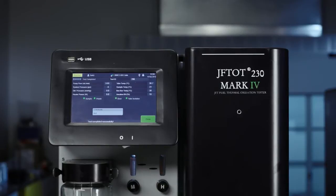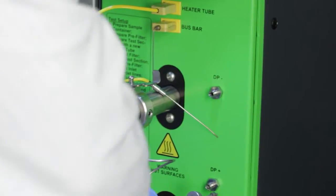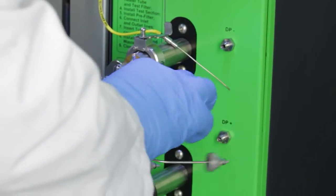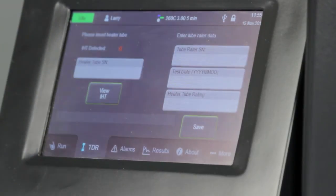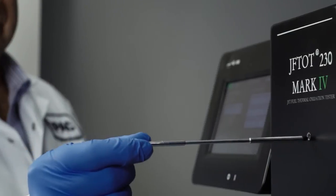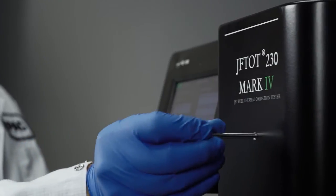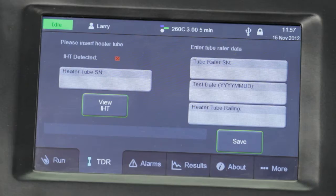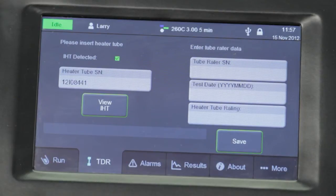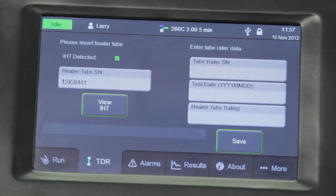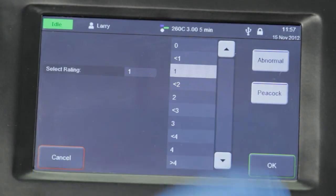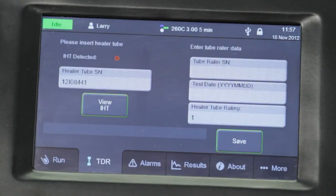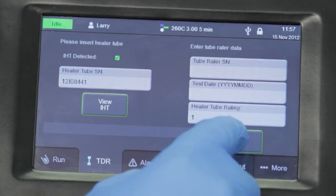When the test is done, you can rate the heater tube. Let the heater tube section cool and then remove the heater tube and rate the deposit as specified by the standard you use. Next, go to the TDR tab. If you used an intelligent heater tube like this one, insert the IHT into the reader slot located at the top of the instrument. The IHT serial number will automatically populate in the serial number field. Select the tube rating from the drop-down menu. Press OK and then press the Save button to save the data onto the IHT and into the filed database on the instrument.